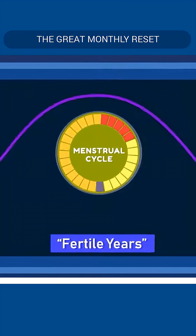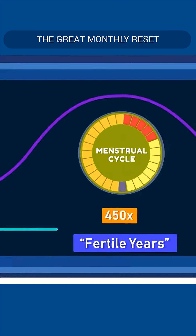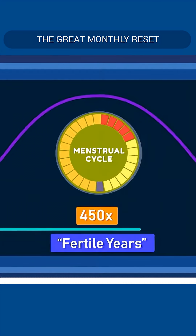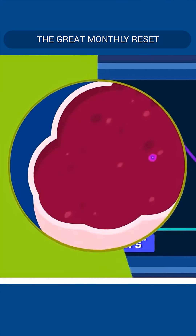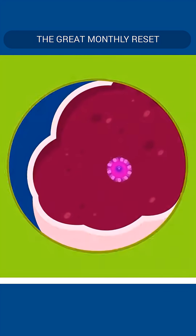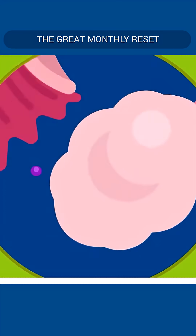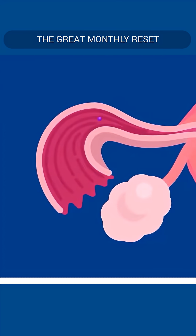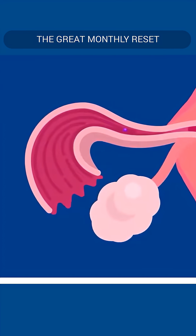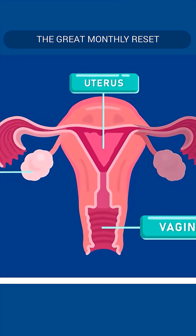During a woman's fertile years, her ovaries will go through about 450 ovarian or menstrual cycles. During each cycle, a number of haploid eggs will begin to mature, but usually only one egg cell from one or the other ovary will mature completely and be released, while the others will degenerate.